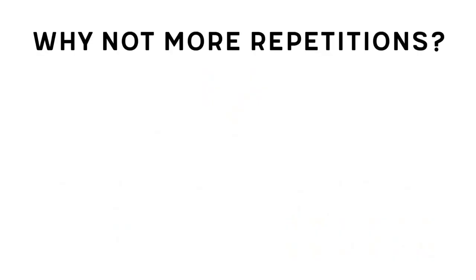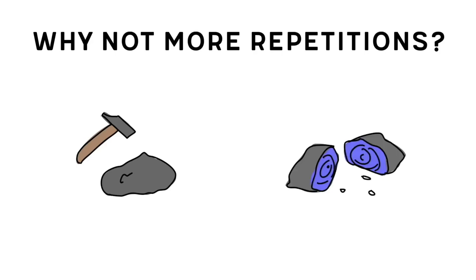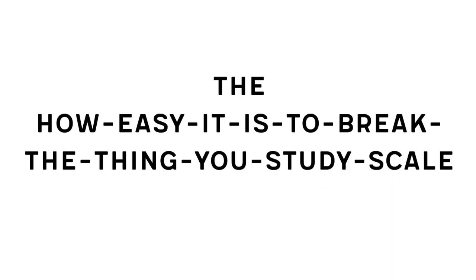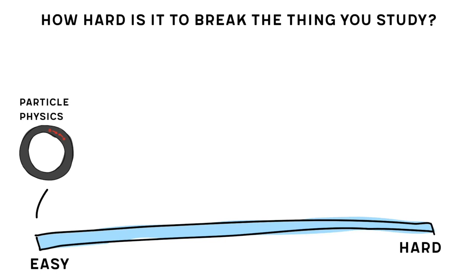It seems like an obvious improvement to just do more repetitions — but there's a problem with that. Often, experiments require the researchers to break things. Let me introduce you to my scale of how easy it is to break the thing you study. All the way to the left, you have things like particle physics — it's easy to break particles. All you need is a big ring and some spare electrons you put in there really, really fast. Once you have these two basic things, you can break millions of particles and measure what happens, so you can calculate really good statistics. Then you have material science, where the only thing that stops you from testing how hard a rock is, is the price of your rock — that makes us quite confident in the material properties of things.